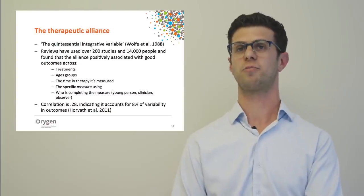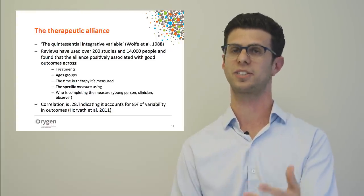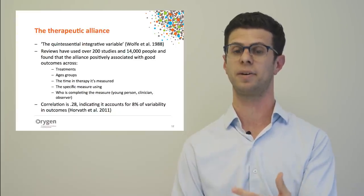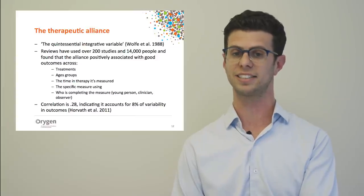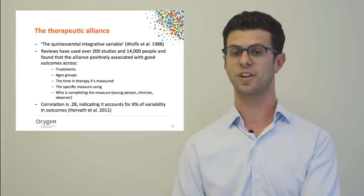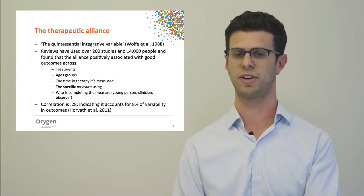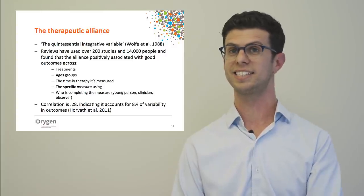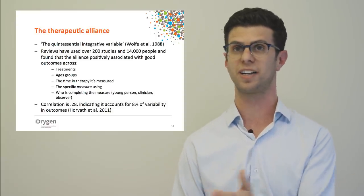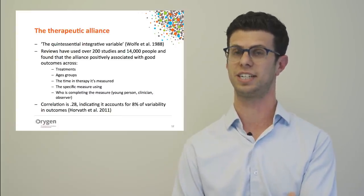The therapeutic alliance has been described as the quintessential integrative variable. Reviews of over 200 studies and over 14,000 people show that a positive alliance — positive bond, agreement on tasks and goals — is associated with and predicts positive outcomes across different treatments, client ages, times of therapy, measures used, and whether rated by the young person, clinician, or observer. The correlation coefficient is about 0.28, accounting for roughly 8% of variability in outcomes — one of the leading predictors.